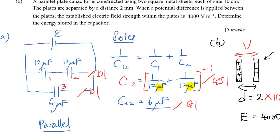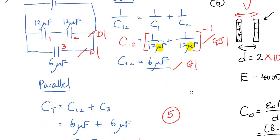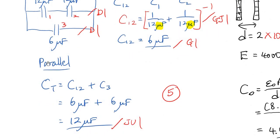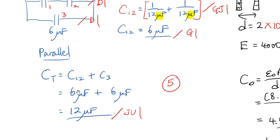Alright. So C1,2 is 6 microfarad. So here you get 2 marks. And then after that, you get C1,2. You get a parallel. Parallel is just add up. C total equal to C1,2 plus C3. So 6 plus 6. You get 12 microfarad.